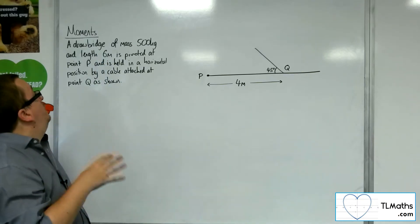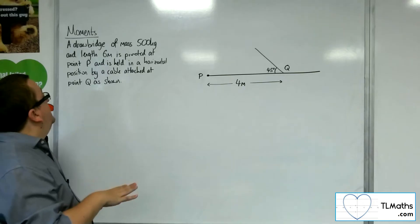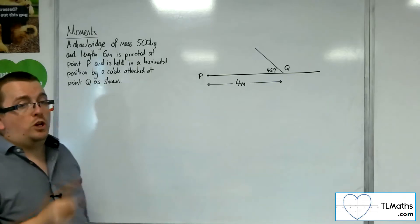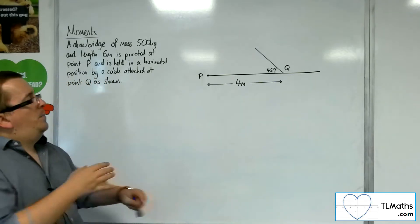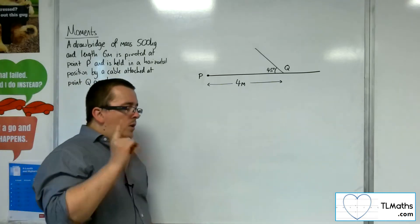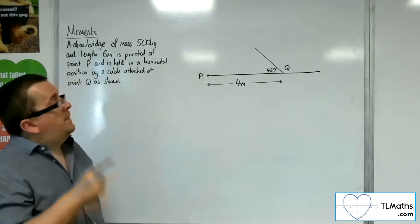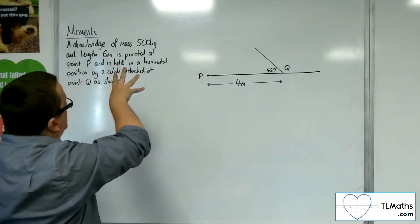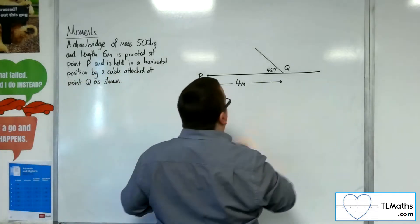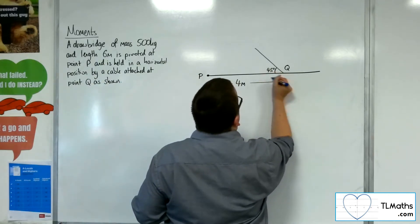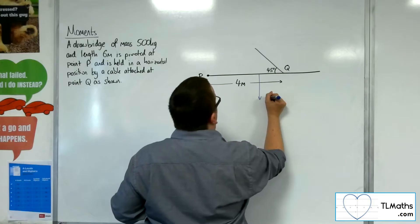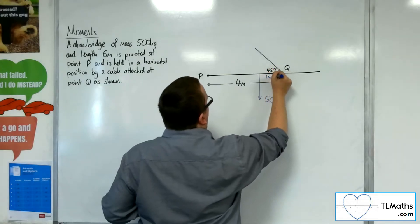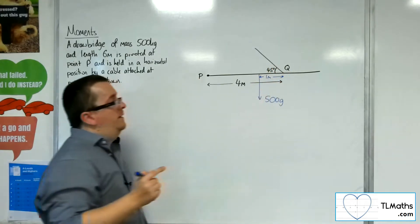We've got a drawbridge of mass 500 kilos and length 6 metres, pivoted at point P and held in a horizontal position by a cable attached at point Q. The drawbridge has a mass of 500 kg and length of 6 metres, so there will be a point in the middle — the centre of mass — where the weight is 500G, and this length will be 1 metre.